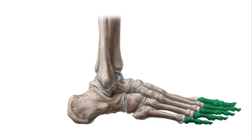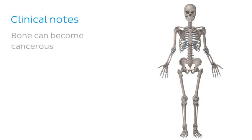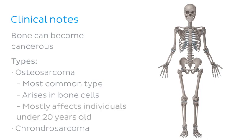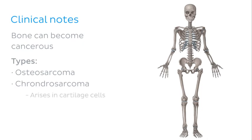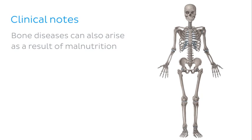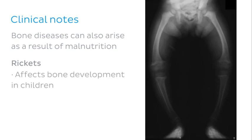Before we finish, let's discuss some clinical notes relevant to the skeletal system. Like any tissue in the body, bones can also be affected by disease, including cancer. Osteosarcoma is the most common type of bone cancer, arises in bone cells and mostly affects individuals under the age of 20. Chondrosarcoma, on the other hand, arises in cartilage cells and mostly affects individuals over 40 years of age. Bone diseases can also arise as a result of malnutrition. Rickets is a condition affecting bone development in children, caused by vitamin D deficiency, resulting in bones becoming soft and weak, and can cause deformities like the characteristic bow legs seen on x-ray.